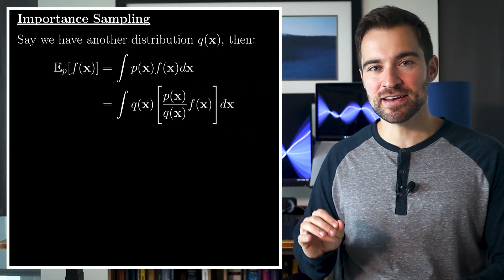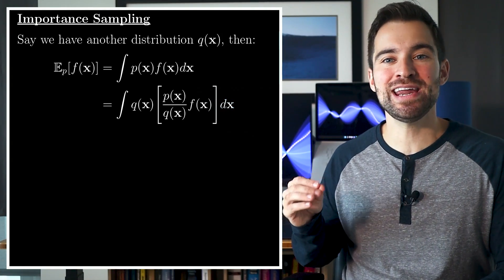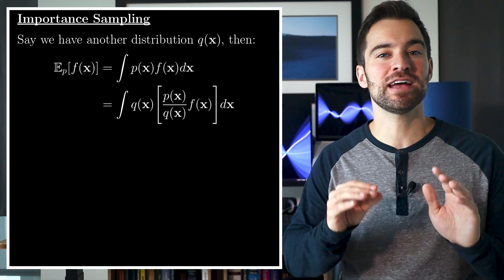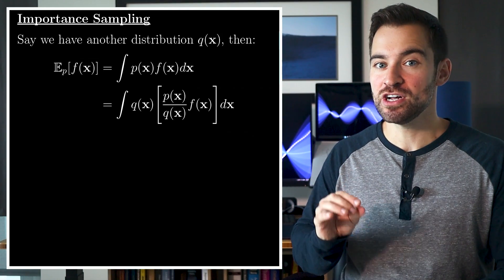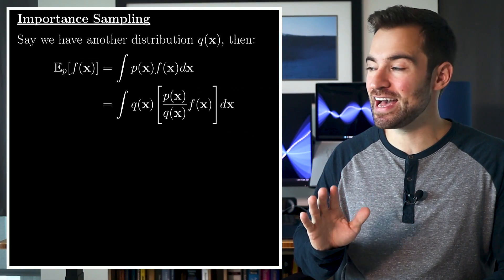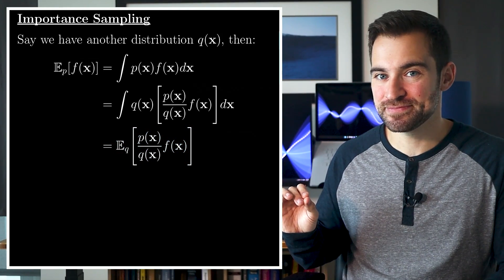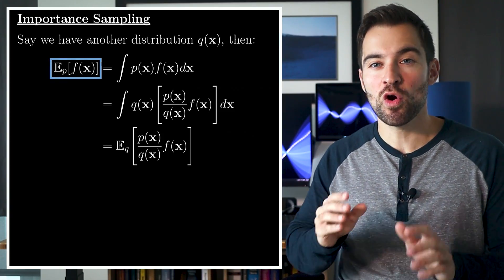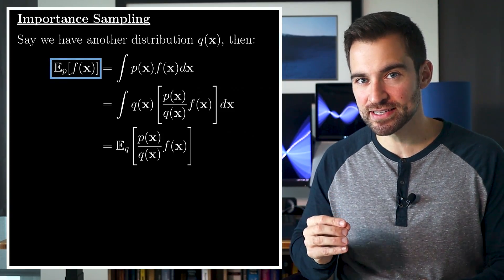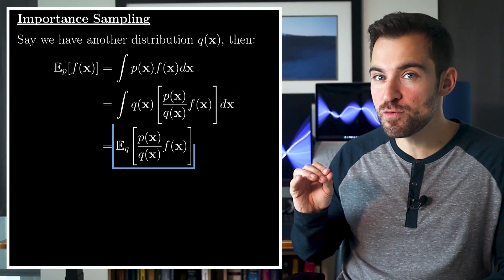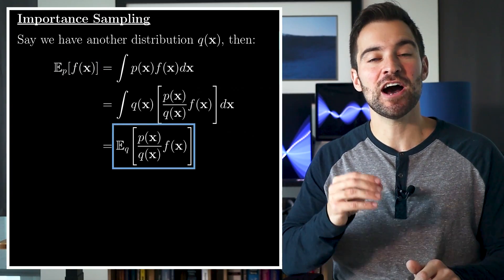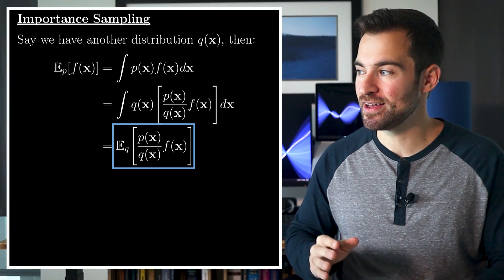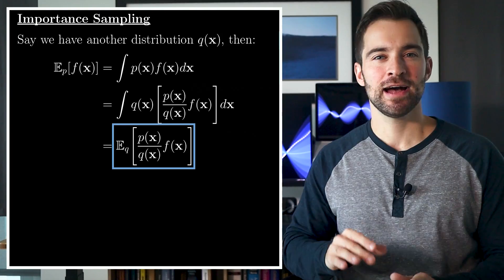Looking at how I've bracketed things, we can see that it's the probability weighted average of a new function, where the probability is given by q instead of p. So, just like we did earlier, we can write that like this. Stepping back, this says the p probability weighted average of f(x) is equal to the q probability weighted average of f(x) times the ratio of p to q densities. That's the trick.